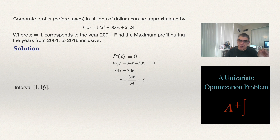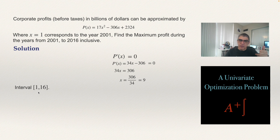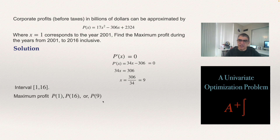By the Extreme Value Theorem, the maximum must occur either at a boundary of the interval or at a critical value. Our candidates are x = 1 and x = 16 as the boundaries, and x = 9 as the critical value. We need to evaluate the profit function at all three points.